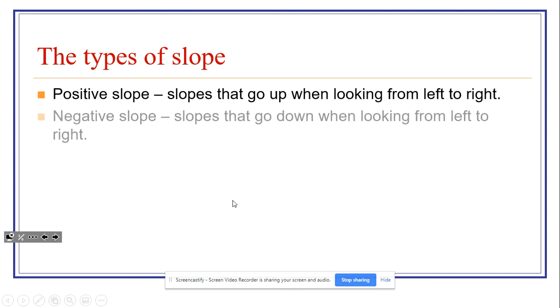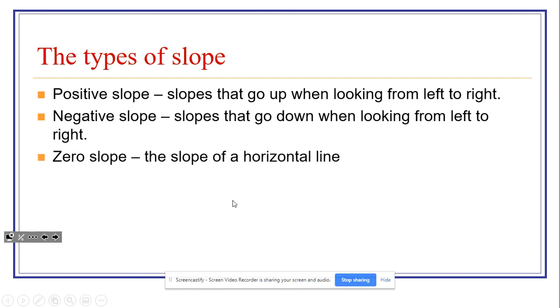On the converse, negative slope would be slope that goes down from when we're looking from left to right. And then we have a couple of fancy slopes. Zero slope is going to be the slope of a horizontal line. A horizontal line is one that goes from left to right.